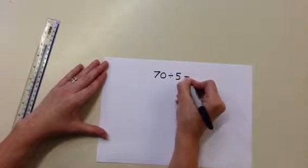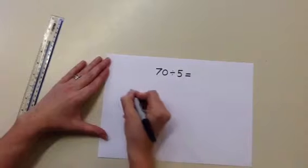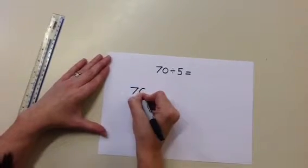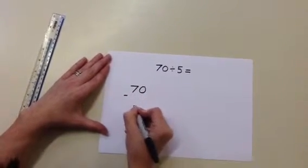First write the sum clearly. 70 divided by 5. This will become a subtraction sum as we take away groups of 5.